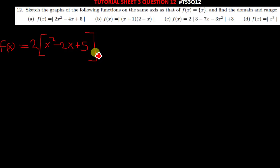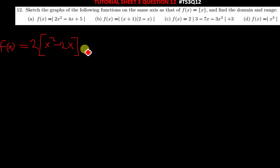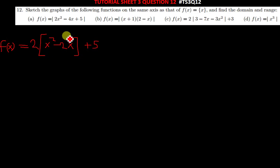Sorry — the 5 is supposed to be outside the bracket. So after doing that, you now complete the square inside the bracket.